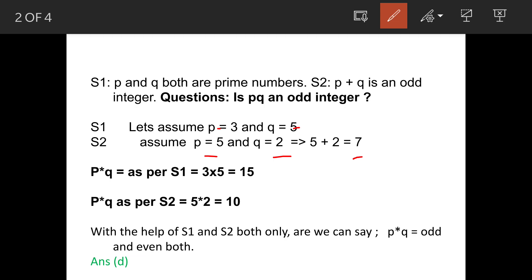Now, as per statement 1, when we put the values, 3 into 5 is 15. And as per statement 2, which is meeting the conditions given in the question, we get an even value. So that means pq, for values given in both the statements, can be an odd integer or can be an even integer also.